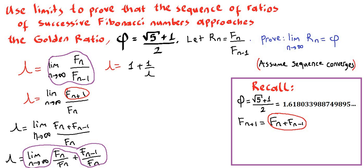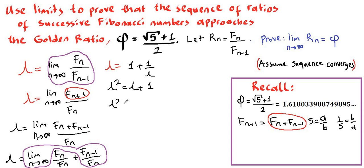It is like a over b: if a over b equals some value, then b over a equals its reciprocal. Now we can multiply all terms by lambda, so we obtain lambda squared equals lambda plus 1. If we subtract lambda plus 1 from both sides, we obtain lambda squared minus lambda minus 1 equals 0. Now we have a quadratic equation, which we can solve using the quadratic formula.